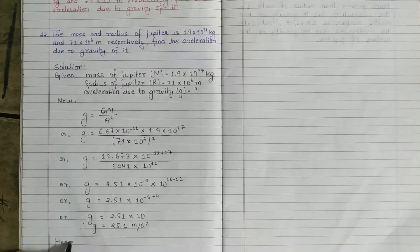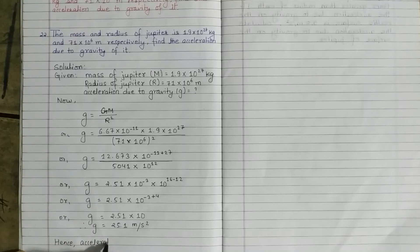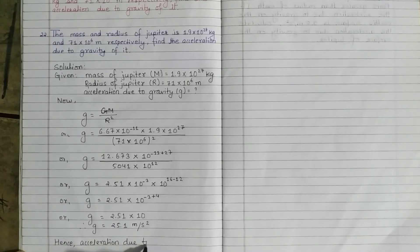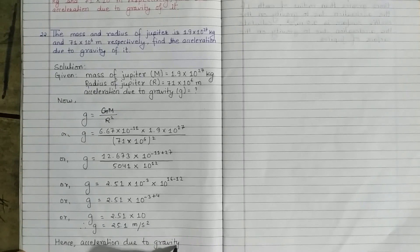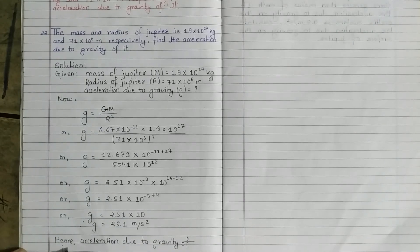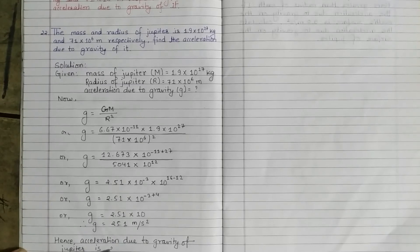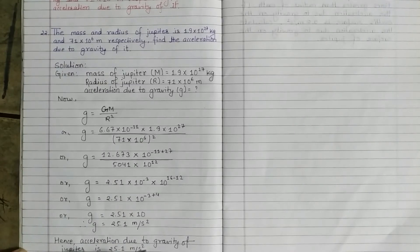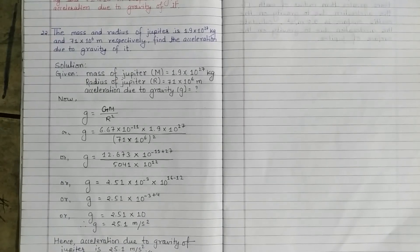Hence, acceleration due to gravity of Jupiter is 25.1 meters per second squared, or approximately 25 meters per second squared.